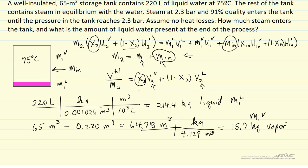Now, all we have to do is look up all the other values in the steam tables, and we're going to solve for the final quality, the final mass, and therefore also the mass that flows into the system.